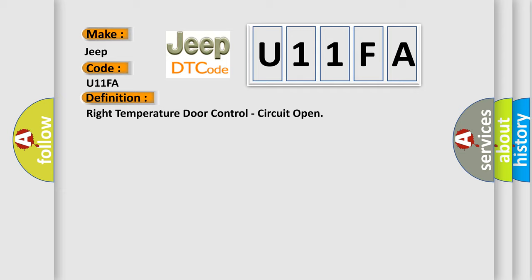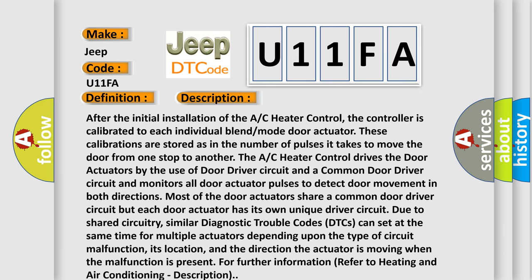After the initial installation of the AC heater control, the controller is calibrated to each individual blend mode door actuator. These calibrations are stored as the number of pulses it takes to move the door from one stop to another. The AC heater control drives the door actuators by use of a door driver circuit and a common door driver circuit, and monitors all door actuator pulses to detect door movement in both directions. Most door actuators share a common driver circuit, but each has its own unique driver circuit. Similar DTCs can set simultaneously for multiple actuators depending on the type of circuit malfunction, its location, and the direction the actuator is moving when the malfunction is present. For further information, refer to heating and air conditioning description.